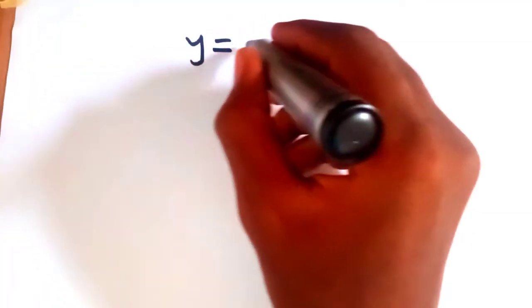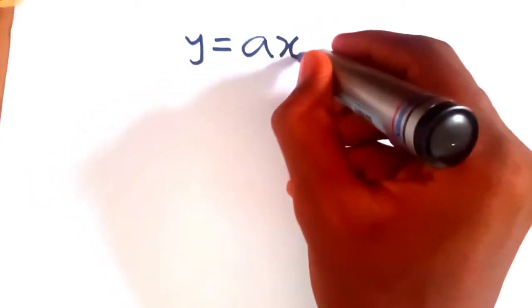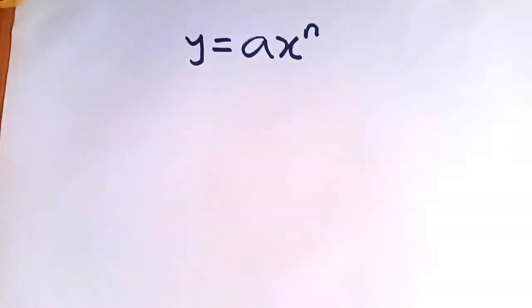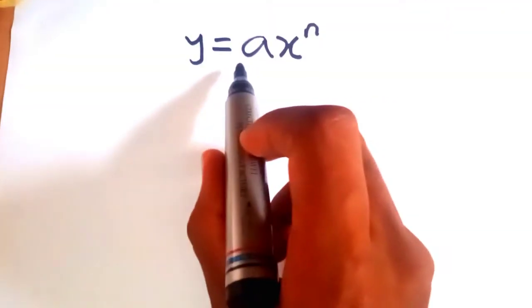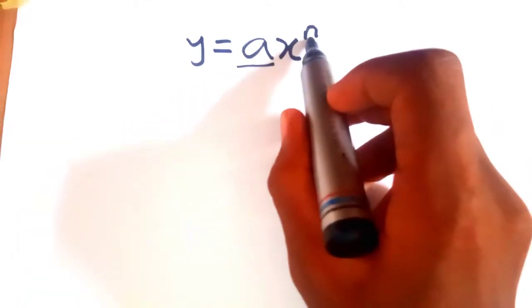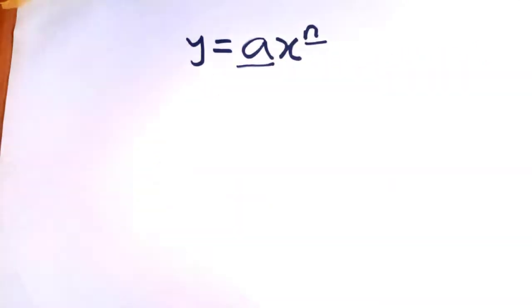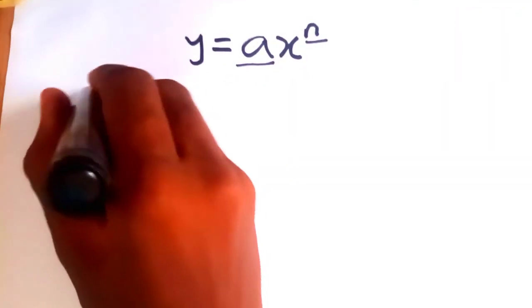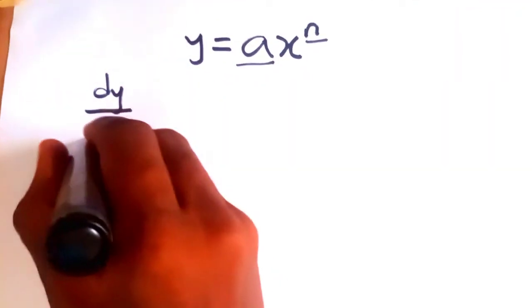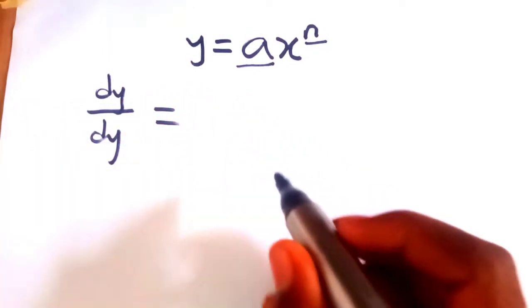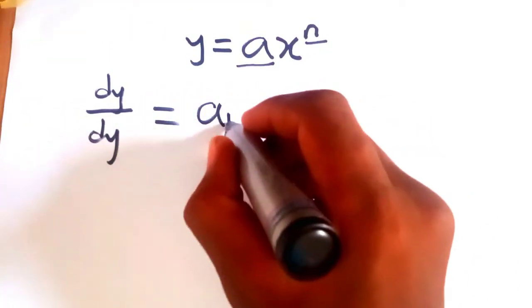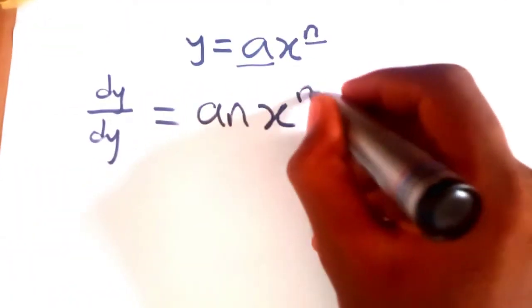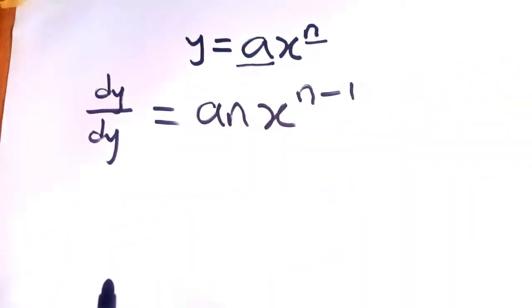So if you have a function y equal to ax raised to the power of n, this 'a' stands for our coefficient and 'n' stands for the power of x. The general law says when we get the derivative, that's dy over dx, it's going to be a·n·x raised to the power of n minus one.